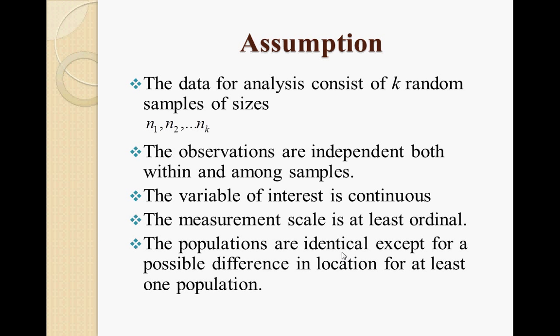For the Kruskal-Wallis test, there are five assumptions. First, the data for analysis consists of k random samples of size N1, N2, until Nk. Second, the observations are independent both within and among samples. Third, the variable of interest is continuous. Fourth, the measurement scale is at least ordinal. And lastly, the populations are identical except for a possible difference in location for at least one population.